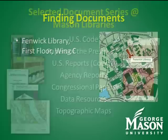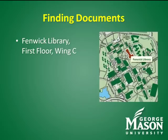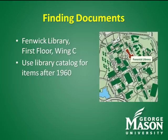The collection is located in Fenwick Library, 1st Floor, Wing C. It includes items in print, electronic, and microfiche formats, as well as items on CD and DVD. To find materials published after 1960, use the Mason Online catalog. To find these materials in the library, you'll need the call number first.